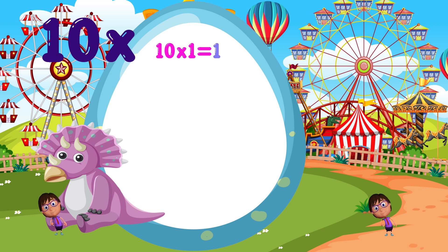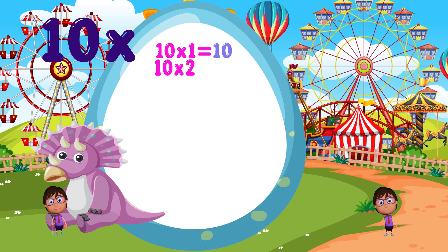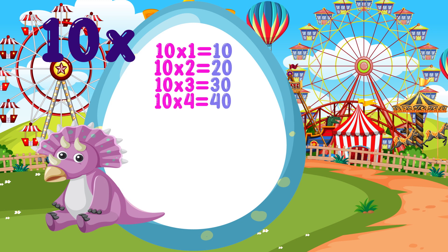10 times 1 is equal to 10. 10 times 2 is equal to 20. 10 times 3 is equal to 30. 10 times 4 is equal to 40. 10 times 5 is equal to 50.